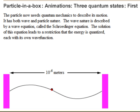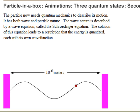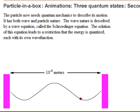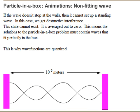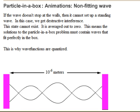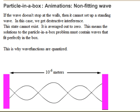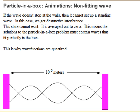The particle is spread over the whole box. The ends are fixed because the particle must stop and reverse when it hits the wall. If the wave did not vanish at the walls, destructive interference would occur and the particle could not exist.